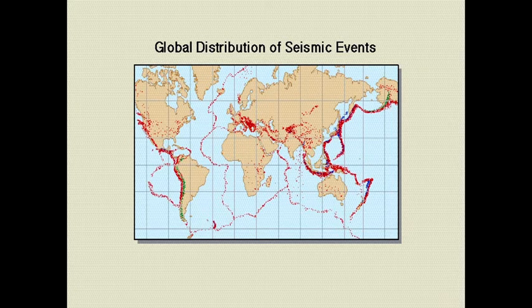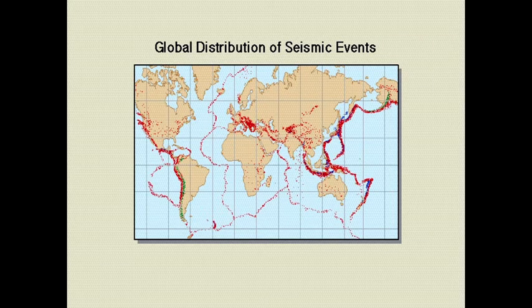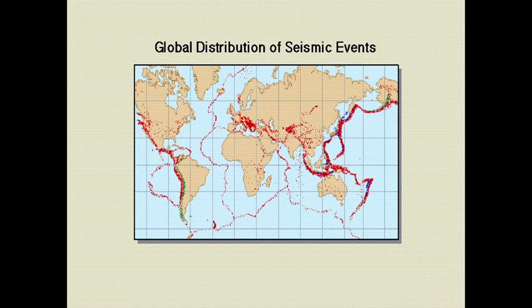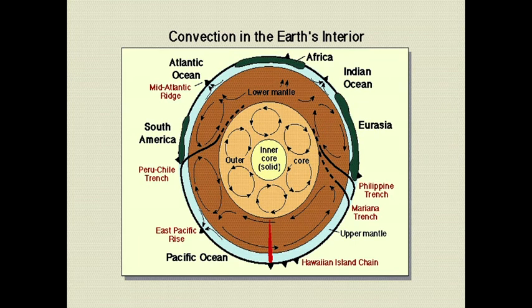From seismology, we learned that the Earth has very profound layering going from the surface down to the center. The center is very hot, with lots of high heat that escapes by traveling upward as convection cells, similar to what's shown here.